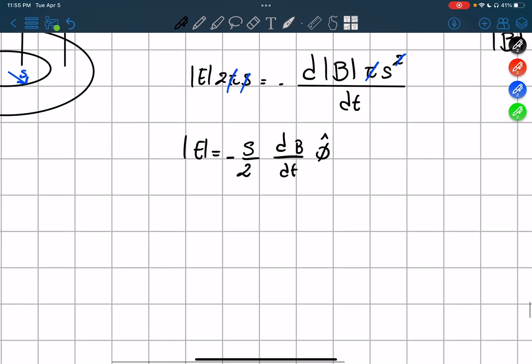Now as you can see, the electric field, which is now a vector, changes only if the B is changing. If it's not changing, then it's not going to change.